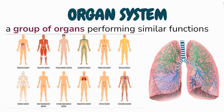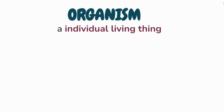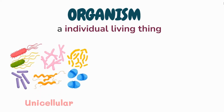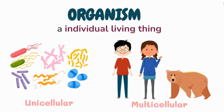Physiologists study the function of the parts of the body as they work together. An organism is an individual living thing that has an organized structure. Organisms can be unicellular, such as bacteria or amoeba, or multicellular, comprised of organs and organ systems. A human being is an example of a multicellular organism.